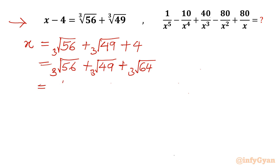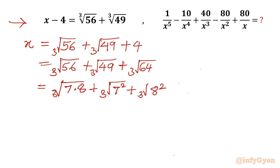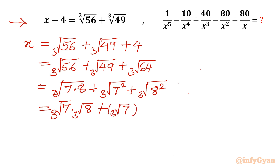Now we will factorize. Cube root of 56 can be written as cube root of 7 times 8. We can consider 49 as 7 squared, and 64 as 8 cubed. Using exponent properties to split the cube roots, we can write the equation equal to cube root of 7 whole square plus cube root of 8 whole square.